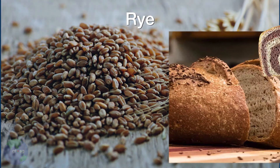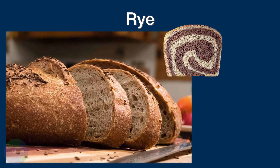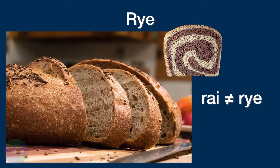Rye cereal grain and rye flour are most often used to make traditional rye bread. Rye is also a common ingredient in beer and alcohol. Do not confuse the cereal grain rye with the Indian term rai, which is spelled R-A-I instead of R-Y-E. This is a different grain that does not contain gluten.